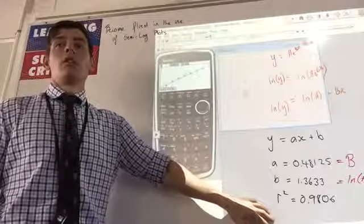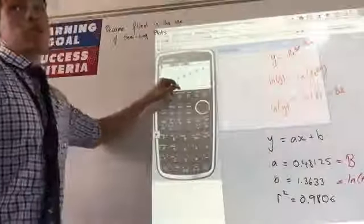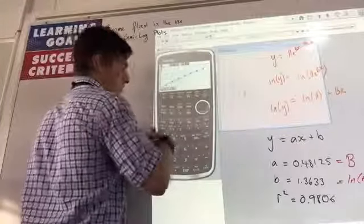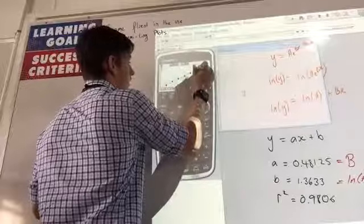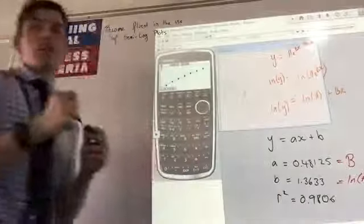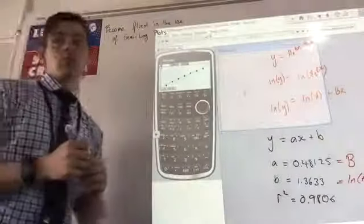Does that mean it's more curvy? It's the distance between the points and the lines greater. So the r squared value measures, wrong side, measures the distance between our points and our line. That's what it's called a correlation. Clear?